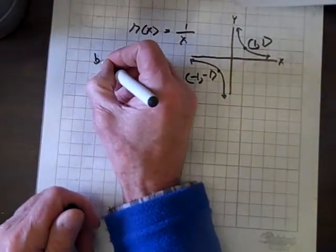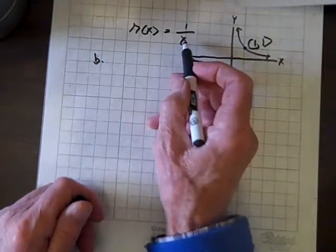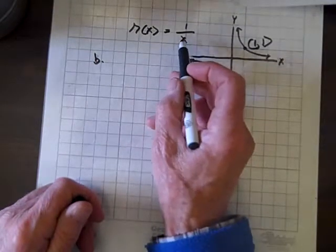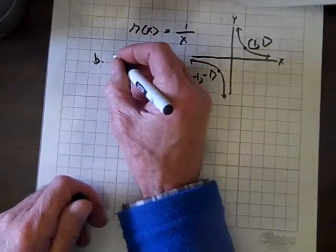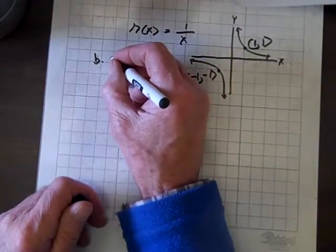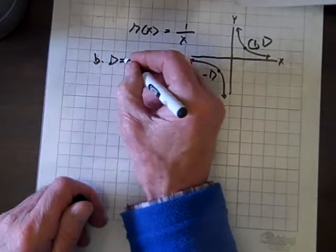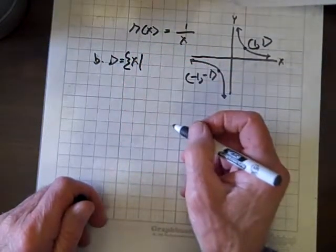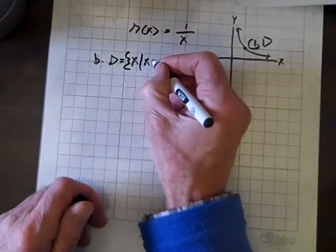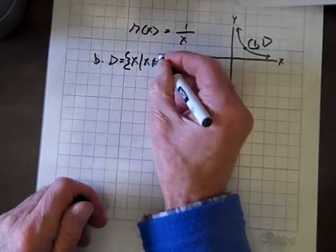As to the domain, we do have the possibility of division by zero. If we let x be zero, then we would have division by zero. So the domain equals the set {x such that x ≠ 0}.